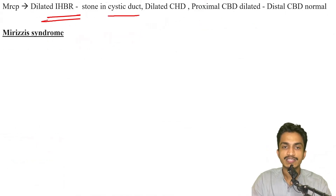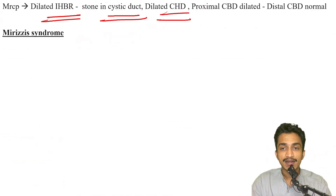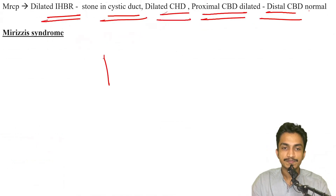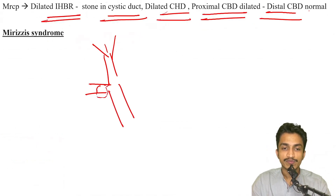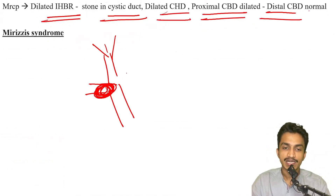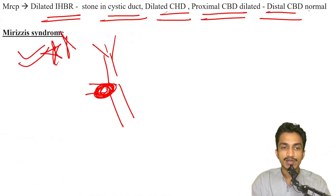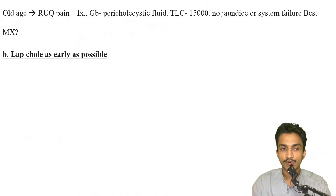Patient with MRCP image showing dilated intrahepatic biliary radicals, a cystic duct stone, dilated common hepatic duct, proximal CBD dilatation, and distal CBD normal — this points to a large stone compressing over the common hepatic duct and common bile duct junction, causing dilatation of the CHD and proximal CBD. This is a typical scenario for Mirizzi syndrome.